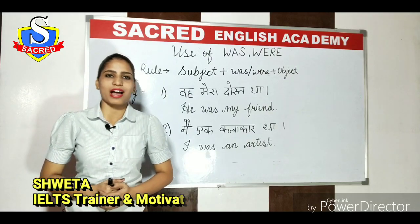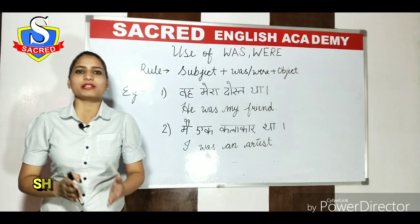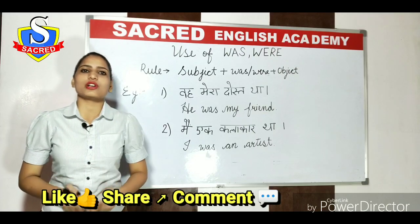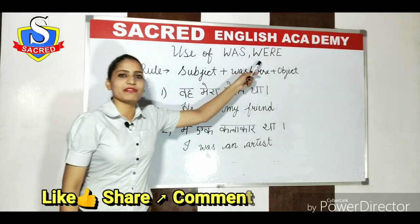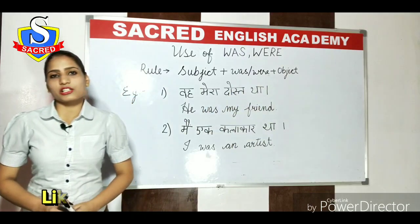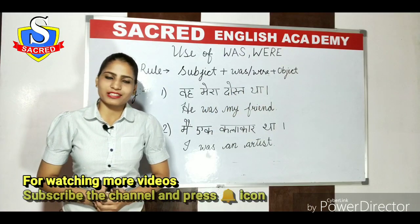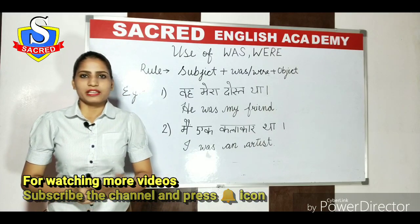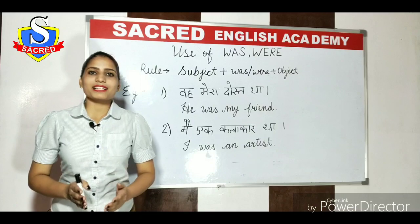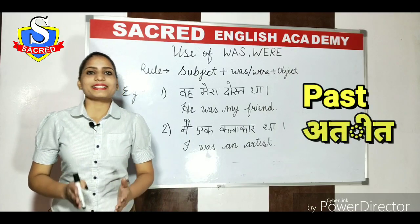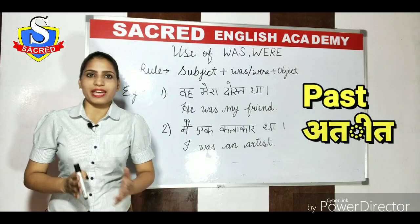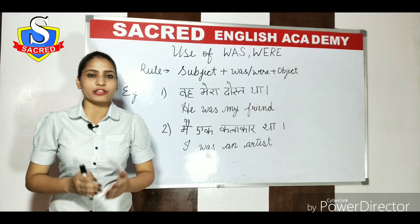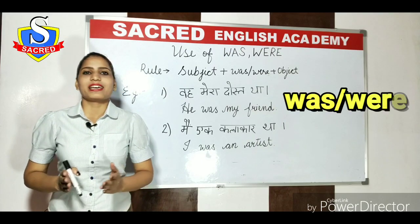Today's video is about ALS students who have a lot of problems in grammar. My today's topic is the use of 'was' and 'were'. Before starting the topic, let me tell you one thing: 'was' and 'were' is only for past. Past means bhoot kaal — aisee cheezay jo ki nikal chuki hai, aisee baatein jo ki ho chuki hai. Agar aapko unko describe karna hai, to you have to use 'was' and 'were'.